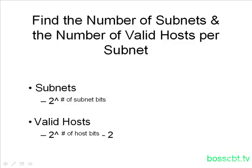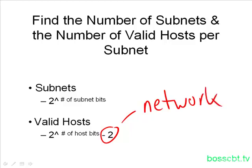We're subtracting the minus two at the end because we have the network number that we don't assign, and we have the broadcast address which does not get assigned to one single host. So when we say valid hosts, we really do mean the IP addresses in a subnet that we can actually allocate to endpoints like a computer or a router.